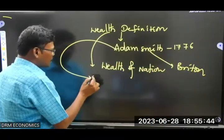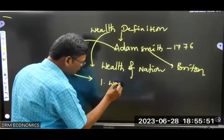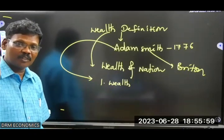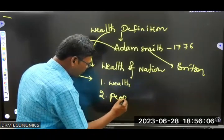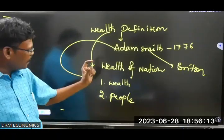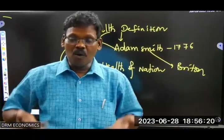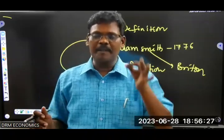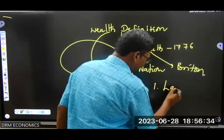In the wealth definition, the first priority was given to wealth, and the second priority was given to people. It did not discuss anything except wealth creation — how countries are creating wealth. That was the primary concern.